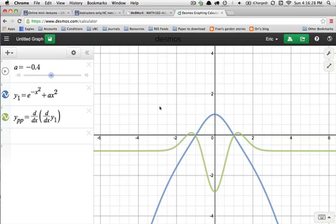In assignment 4b there's a question that asks you to use either a graphing tool or a spreadsheet to determine for what values of a does the function e to the minus x squared plus ax squared have no inflection points.